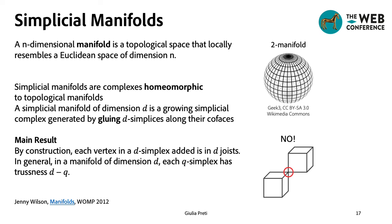a simplicial manifold of dimension D is a simplicial complex generated by a growing process that adds a D-simplex at a time, using one of its co-faces. As a consequence, we can deduce that each Q-simplex in the simplicial manifold has trussness D minus Q.